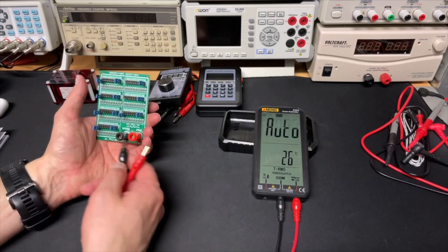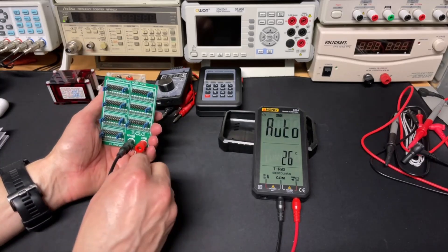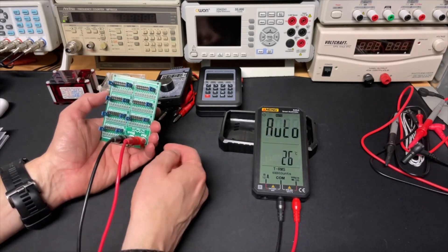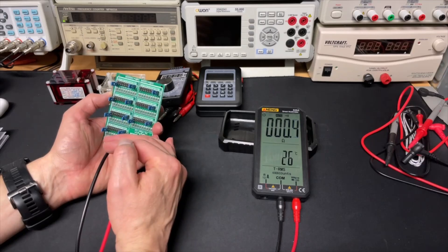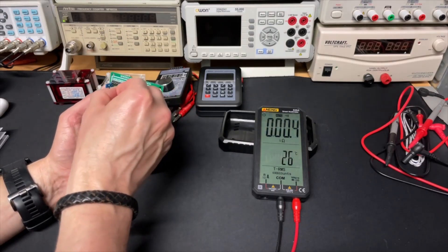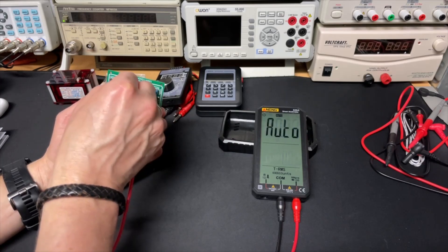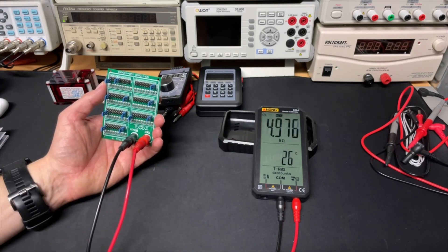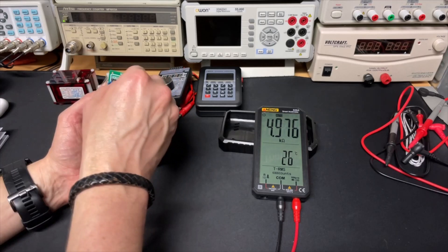I have here my super simple decade box. Now in auto mode, zero ohms. Let me put 5K. Yes, that's 5K, cool.